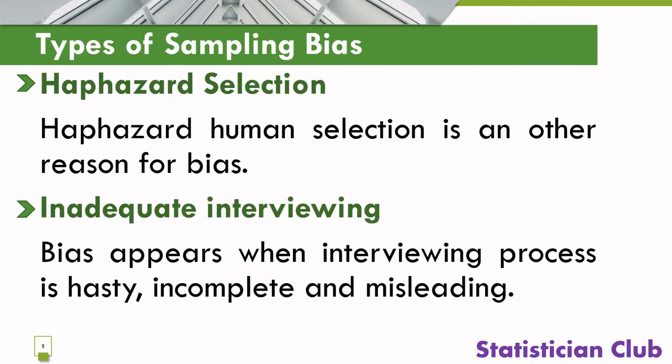Haphazard selection: haphazard human selection is another reason for bias, because you can select a wrong member through haphazard human selection.